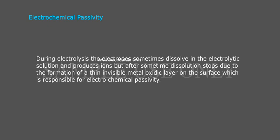Electrochemical passivity: During electrolysis, the electrode sometimes dissolves in the electrolytic solution and produces ions, but after some time dissolution stops due to the formation of a thin, invisible metal oxidic layer on the surface, which is responsible for electrochemical passivity.